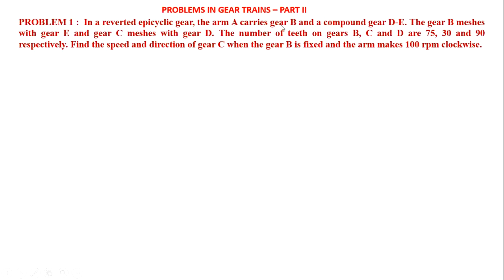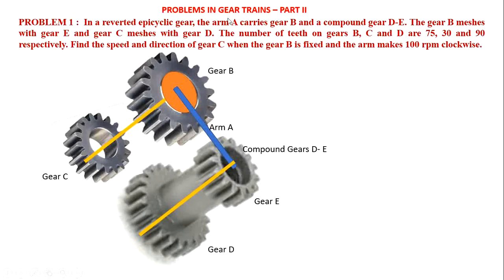The arm A carries gear B and compound gear DE. This is arm A. This arm A carries one gear named gear B and another compound gear DE — this is E and this is D. Either D may be here or here; we have to go to the next sentence. Gear B meshes with gear E, so since this is gear B, this is meshing with gear E, therefore this must be gear E.